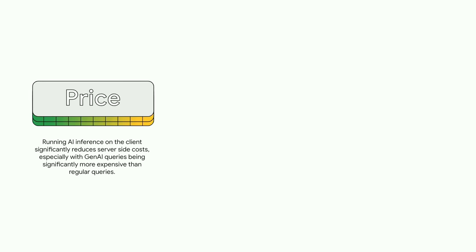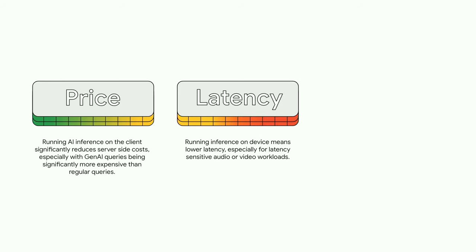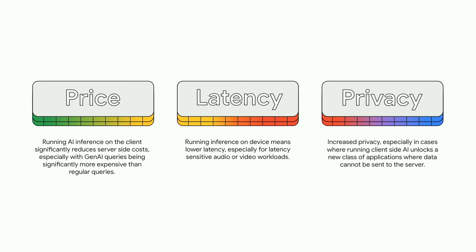Why is this powerful? Running on the browser client significantly reduces server costs. This is especially useful for generative AI queries that can be orders of magnitude more expensive than regular queries. For applications that are particularly sensitive to latency, like audio or video applications, having all your processing happen on-device leads to reduced latency. Running on the client side also has the potential of unlocking a new class of applications that require increased privacy, where data cannot be sent to the server.